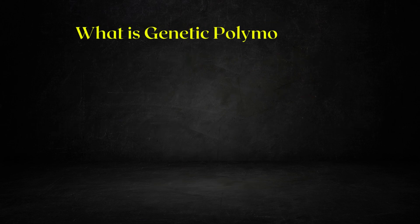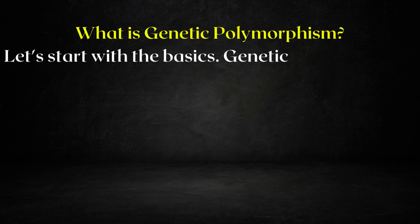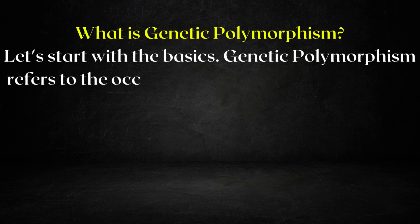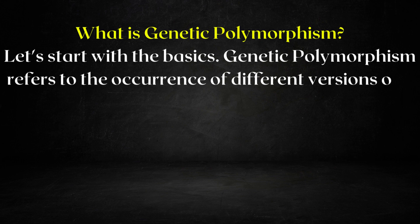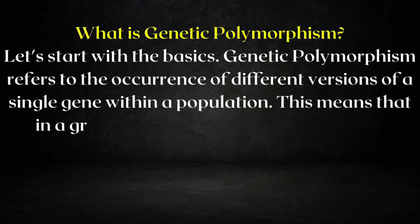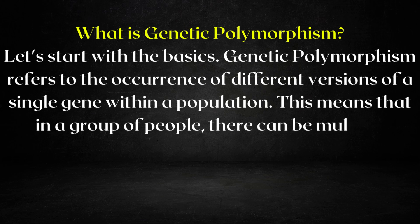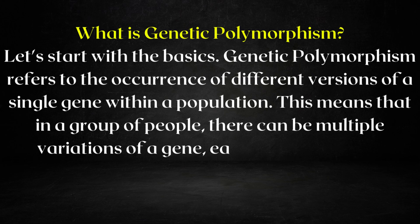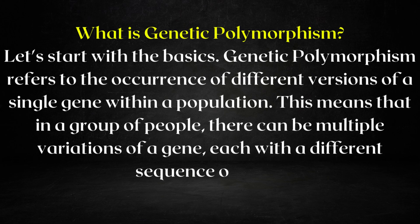The first section is: what is genetic polymorphism? Let's start with the basics. Genetic polymorphism refers to the occurrence of different versions of a single gene within a population. This means that in a group of people, there can be multiple variations of a gene, each with a different sequence of DNA.